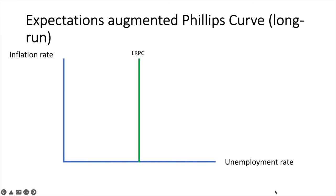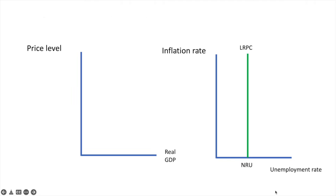To Friedman, the long-run Phillips Curve — or the expectations-augmented Phillips Curve — was a vertical line at the natural rate of unemployment, or NRU in this graph. To understand why this is, let's review the classical aggregate demand and aggregate supply model.